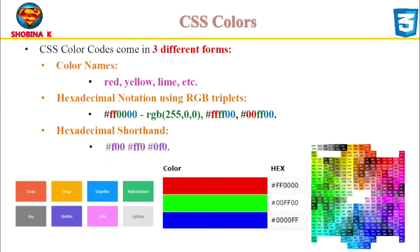We have already seen some properties in CSS that take color values, and there are different ways to specify colors in CSS. Colors are displayed by combining red, green, and blue. The CSS color codes come in three different forms: color names, hexadecimal notation, and hexadecimal shorthand.